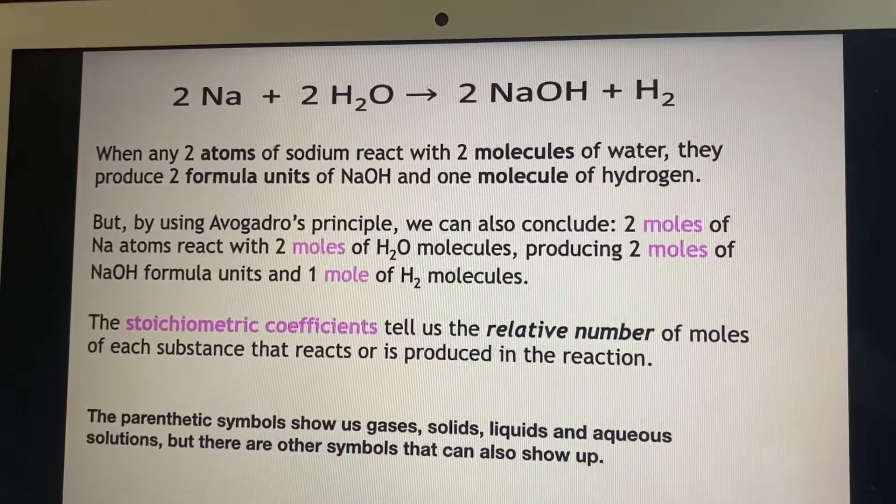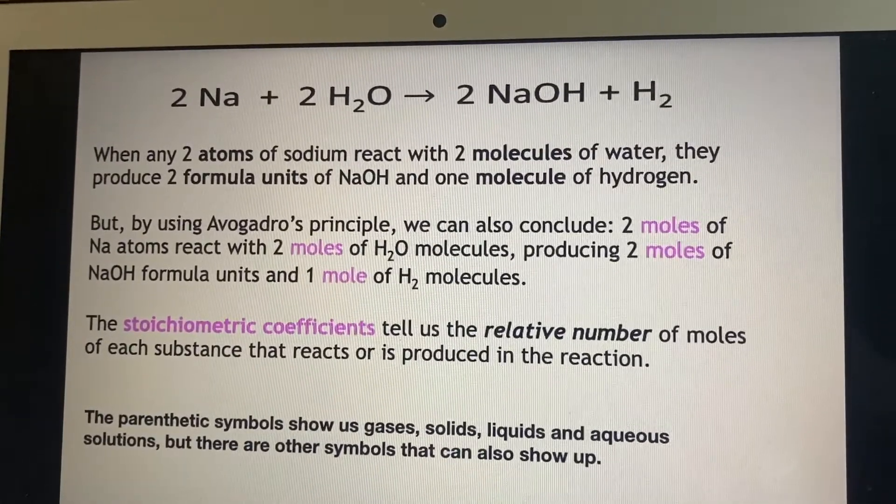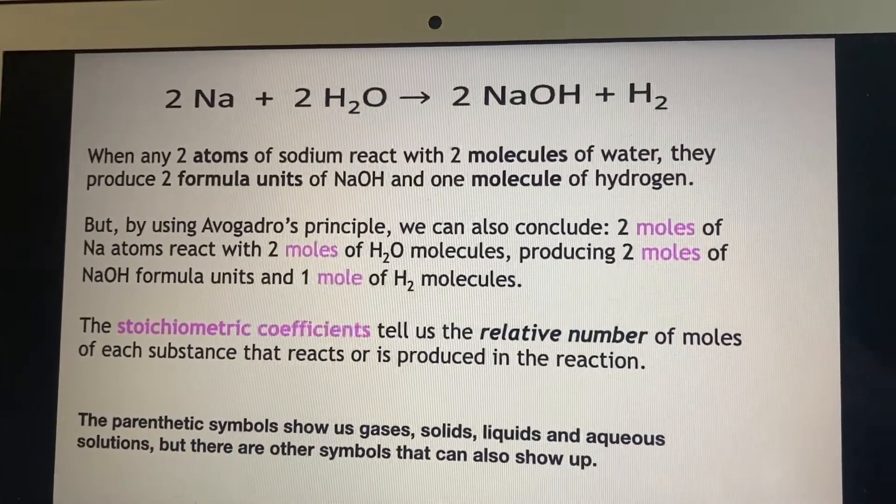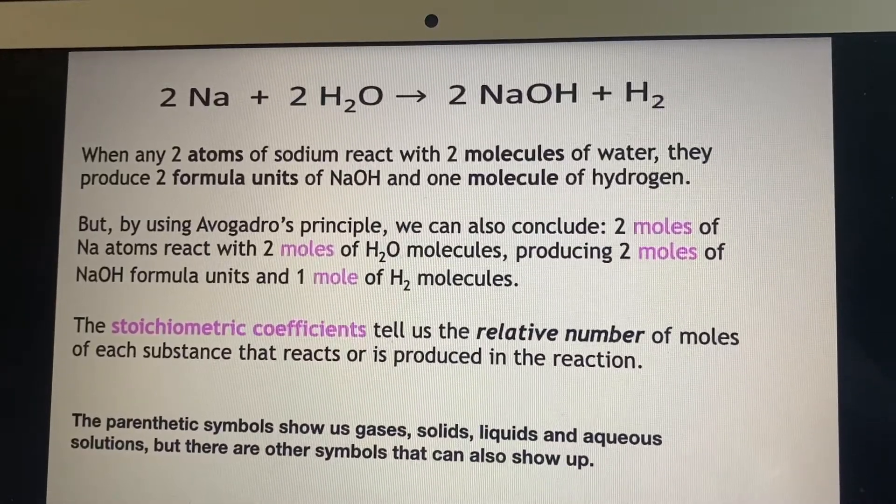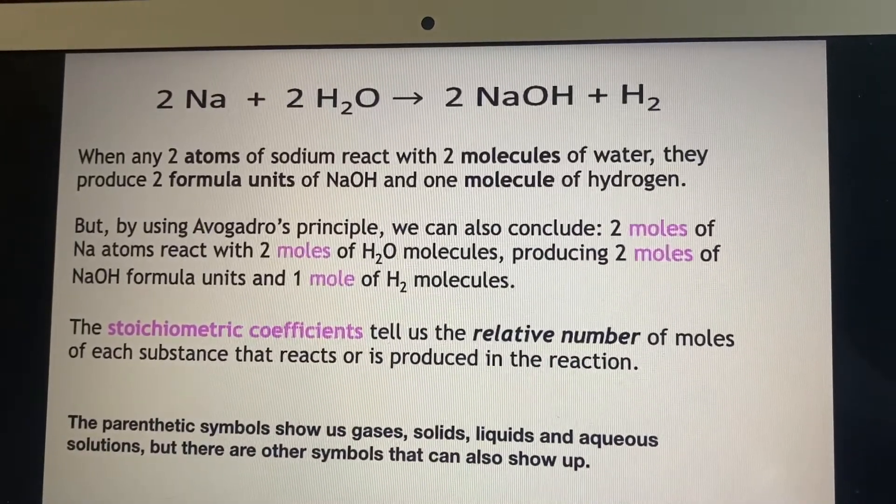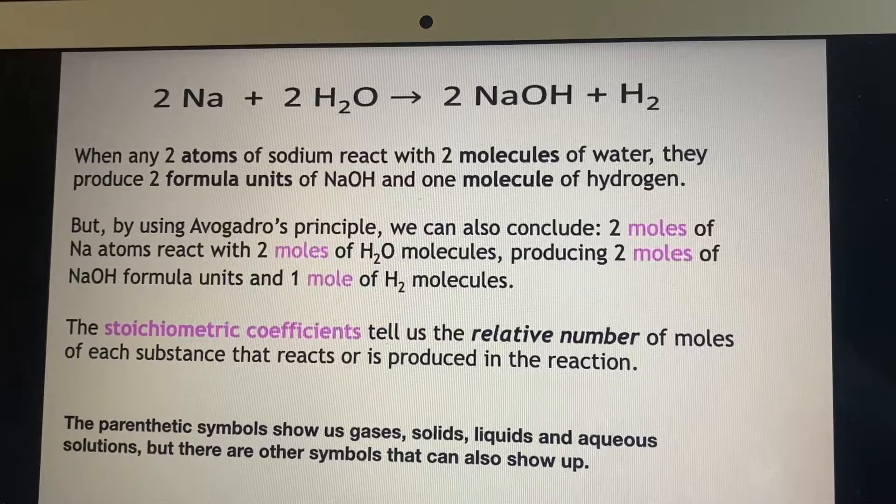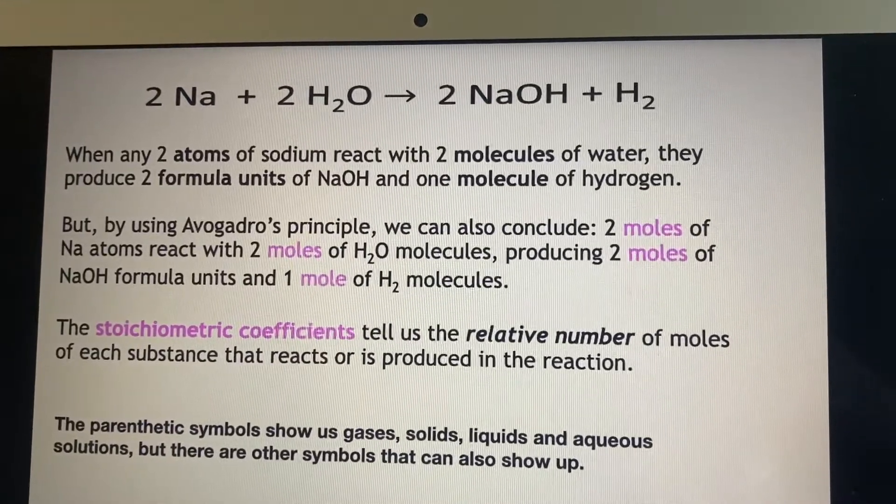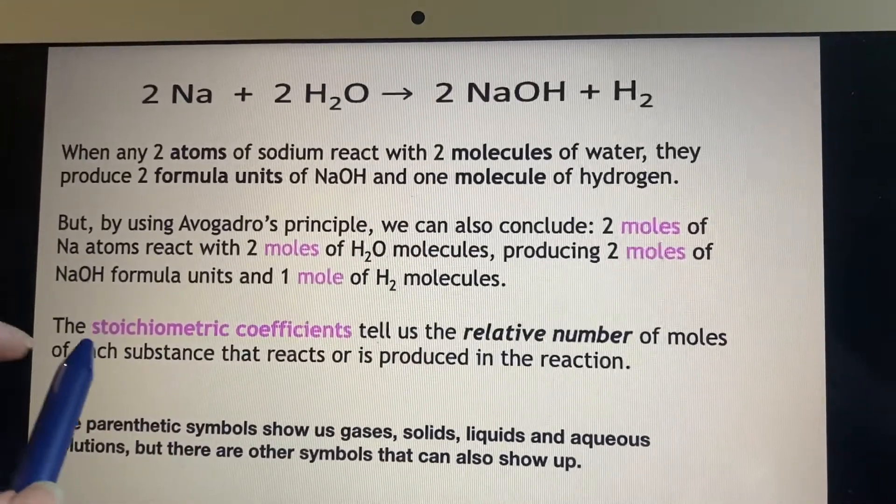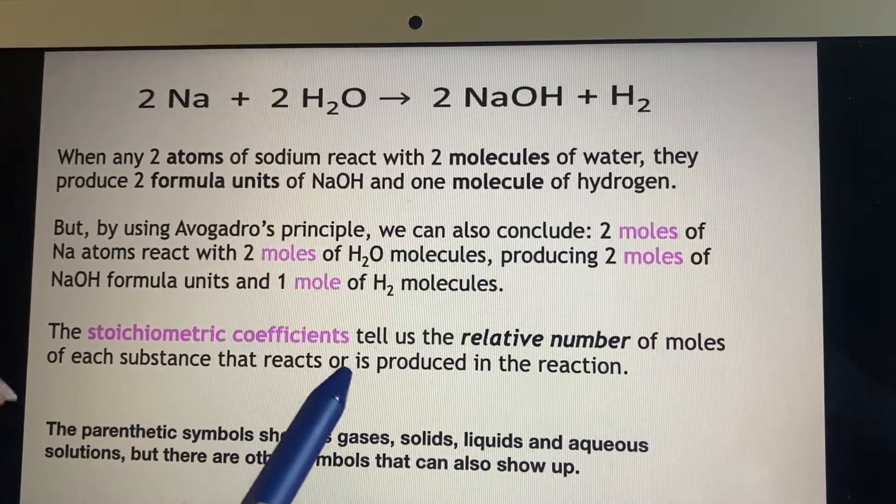which is more useful to me right now? Is it the idea of looking at it microscopically, talking about individual atoms and molecules and formula units? Or is it better for me to look at it in terms of the number of moles? But these stoichiometric coefficients will do both for us.